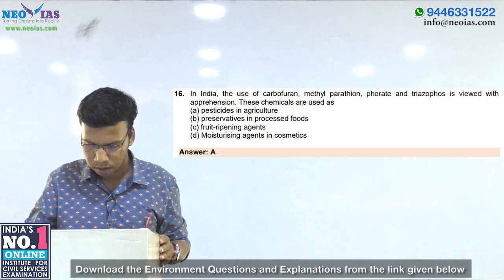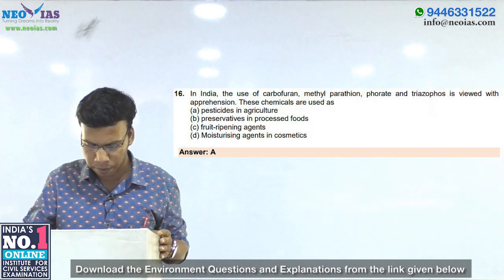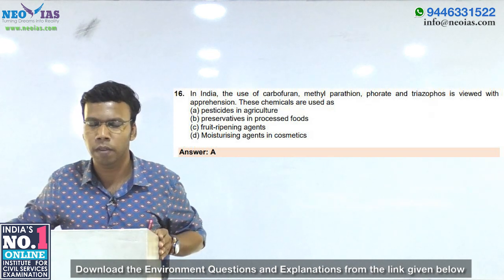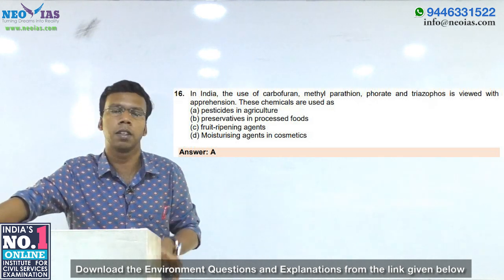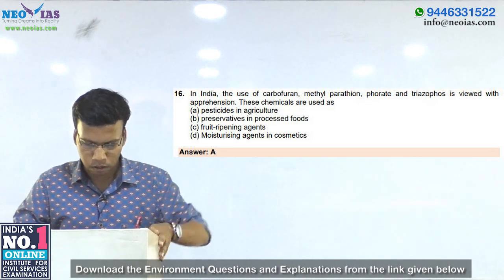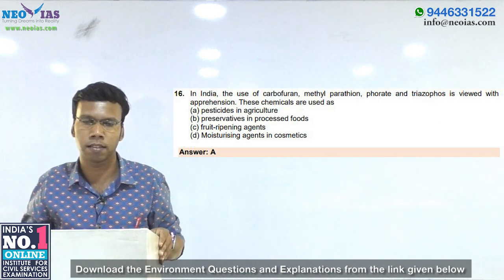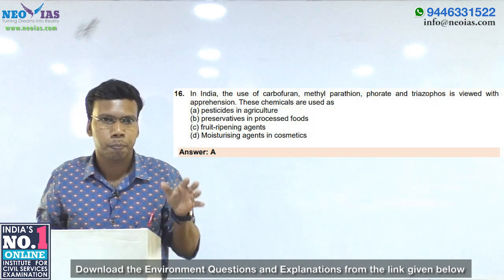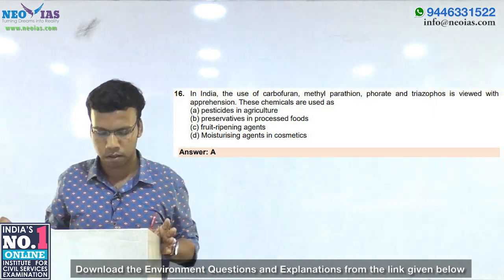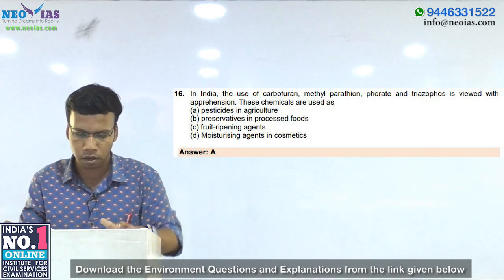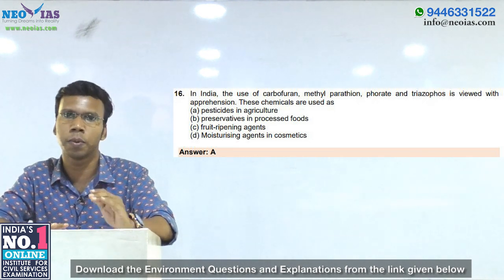The last question from environmental science: in India, the use of carbofuran, methylparathion-48, triazophos is viewed with apprehension. These chemicals are used as — if you know about pesticides, recently there was a ban on 12 pesticides and phasing out of 6 pesticides in India. The Center for Pesticide Suicide Prevention is studying the effects of these bans. Based on that news, the answer for this question is A — pesticides in agriculture. So that's all about the environmental science questions. By going through all these questions, we know that current affairs are an important thing for your UPSC prelims examination.